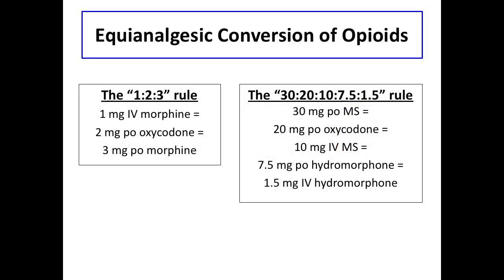Here are a couple of easier rules of thumb to remember. The first is the 1-2-3 rule: 1 milligram of IV morphine equals 2 milligrams of oral oxycodone equals 3 milligrams of oral morphine. Another rule is the 30-20-10-7.5-1.5 rule, which provides an easy-to-remember conversion between commonly utilized opioids, including oral and IV morphine, Dilaudid, and oral oxycodone.